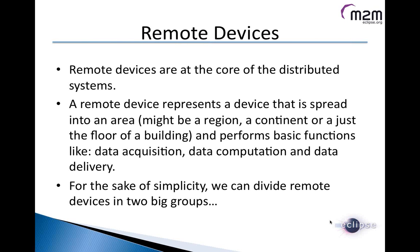The next topic is remote devices. Remote devices are at the core of the distributed system. A remote device represents a device spread across an area — that might be a region, a continent, or just the floor of a building — and performs basic functions like data acquisition, data computation, and data delivery. In machine-to-machine, a remote device is typically an electronic system capable of acquiring data from sensors, acting through actuators, elaborating information, and sending data to a remote server.